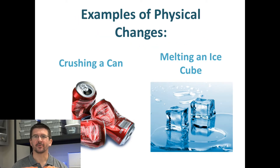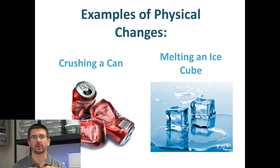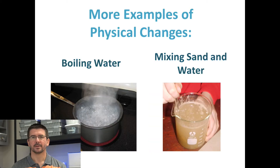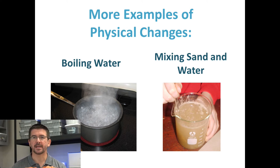We're going to quickly go through a few slides that have several different examples of physical changes — changes in the physical properties of matter. Things like crushing a can or melting ice cubes — that's a change of shape, a change of state, and we still have our original substance. Boiling water is also an example of a physical change. Even though it looks almost like we're making a new substance because we have steam coming off the water, that steam is just water vapor — water in a gaseous form. Chemically, it hasn't changed; it's only changed its state.